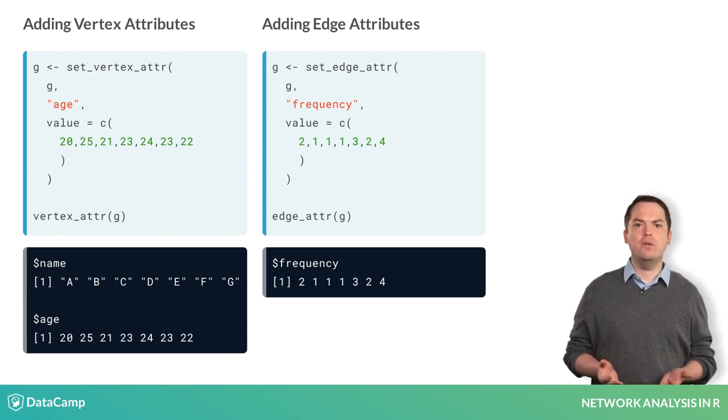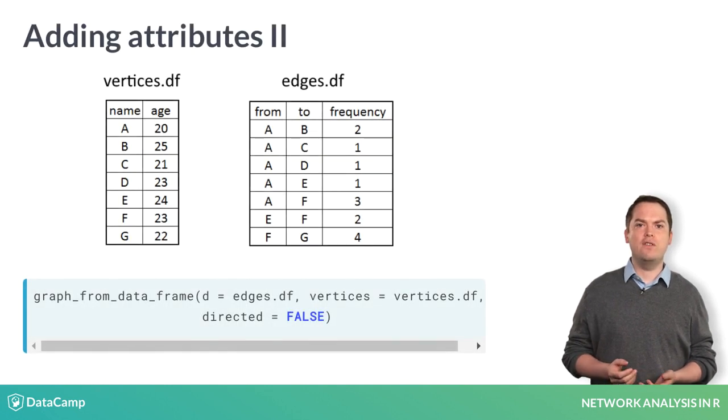You can view vertex and edge attributes using the functions vertex_attribute and edge_attribute respectively. Alternatively, if you already have all your attributes in data frames, then you can create an iGraph object that automatically contains all attributes by using graph_from_data_frame.